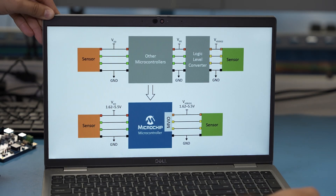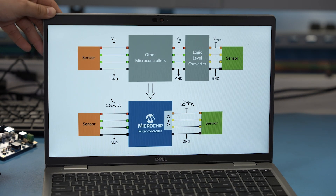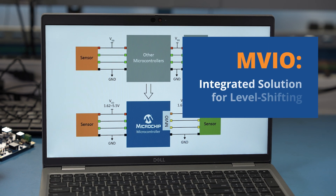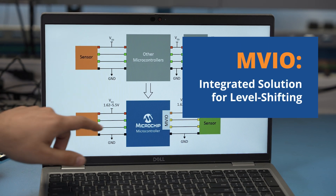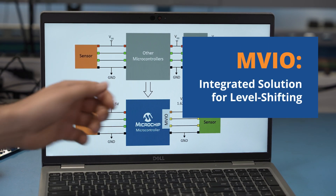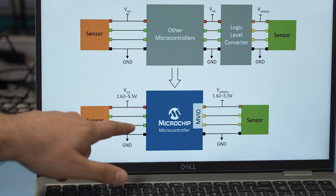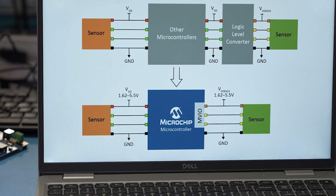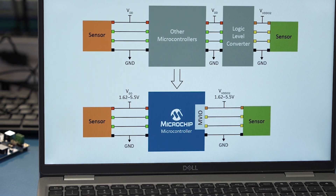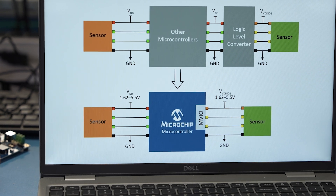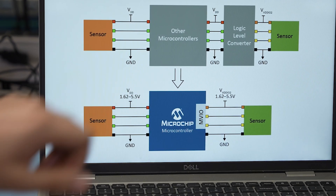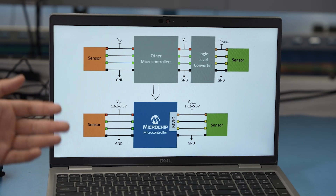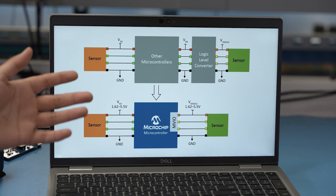Here, let me show you. What makes MVIO a great solution is that it is essentially an integrated level shifting solution built directly into the microcontroller's hardware. This allows specific IO pins to seamlessly interface with components operating at different voltage levels, independent of the core supply voltage — whether it's higher or lower — across a wide range of voltages, all without requiring any external components.